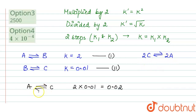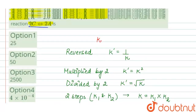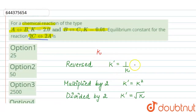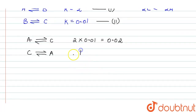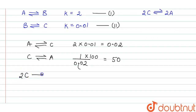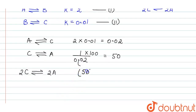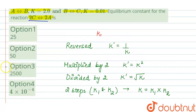Now for 2C in equilibrium with 2A, we first reverse the reaction A⇌C to get C⇌A. On reversing, the equilibrium constant becomes its inverse: 1/0.02 = 50. Then, multiplying the equation by 2, the equilibrium constant gets squared: 50² = 2500. So the correct answer is option 3.